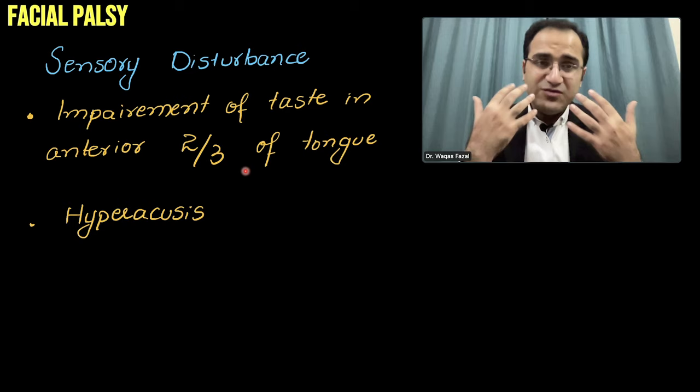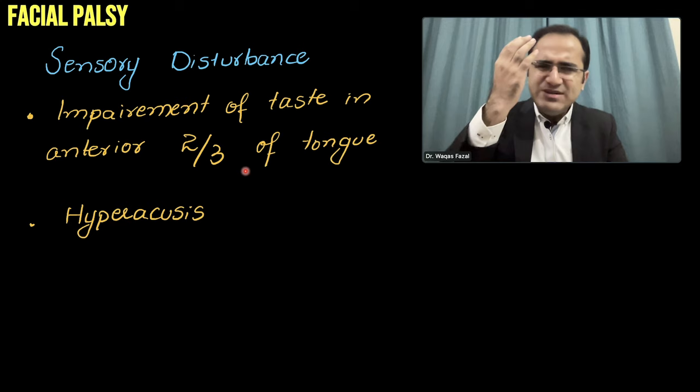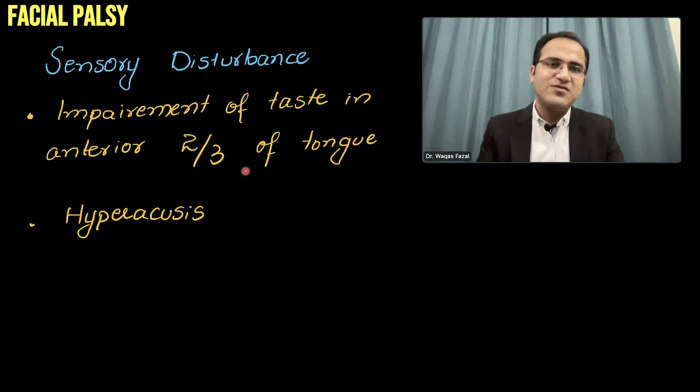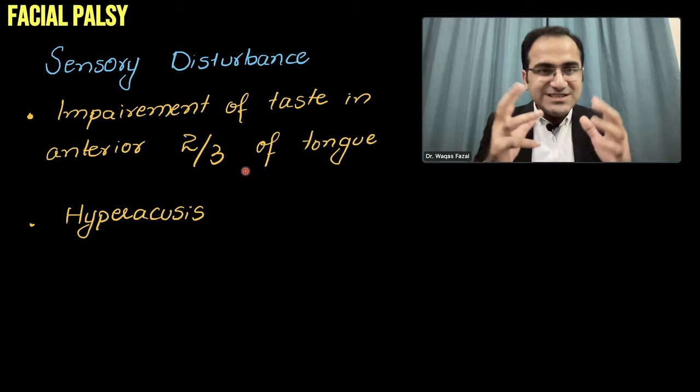Coming to sensory disturbance — whenever patients get facial palsy, they do not realize their one side of the face is paralyzed until someone tells them or they look in the mirror. What they can feel is that the right side of the face feels numb. When someone looks at them, they will tell them that their right side of the face is not moving properly and something is wrong.